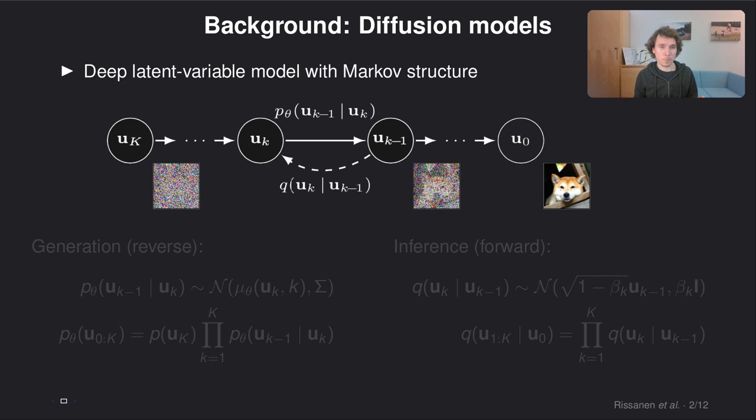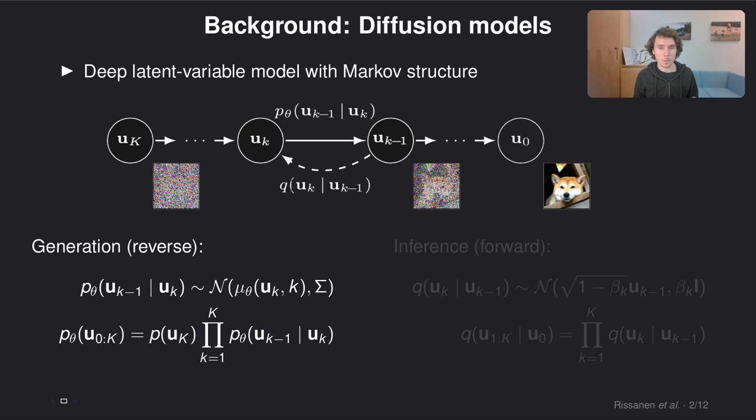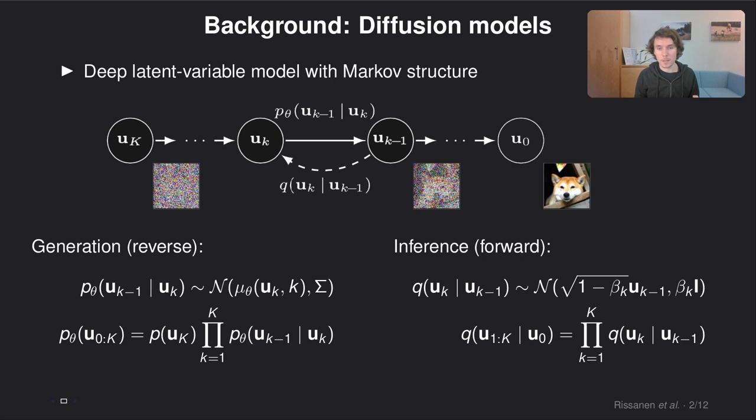So the background here are diffusion models, which are these generative models that generate images by denoising. Usually they are treated as this kind of hierarchical latent variable model that are trained using some form of the variational lower bound using an inference distribution that is this Markov chain of adding noise on top of noise.